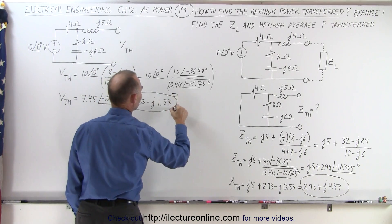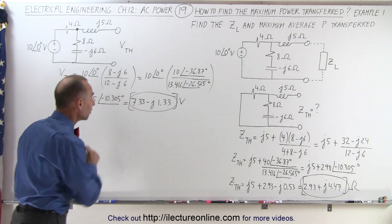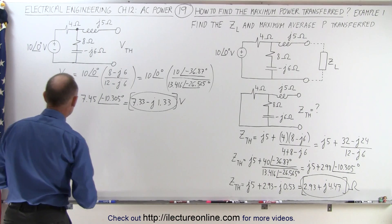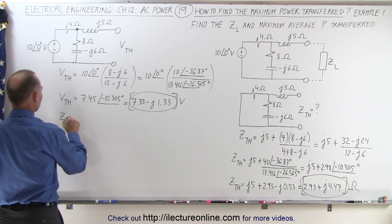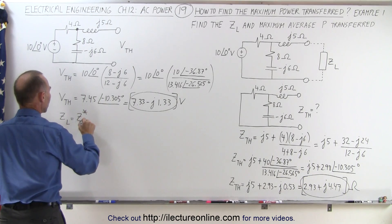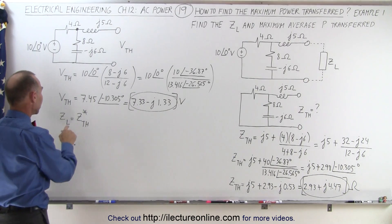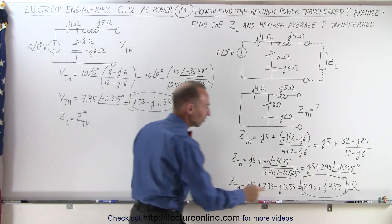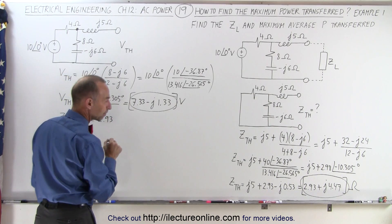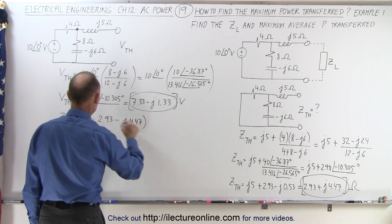So the Thévenin voltage is (7.33 − j1.33) volts, and the Thévenin impedance is (2.93 + j4.47) ohms. We're now ready to find the maximum power transfer. The load impedance Z_load must be equal to the complex conjugate of the Thévenin impedance, which means it must equal 2.93 minus j4.47 ohms.